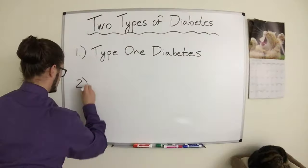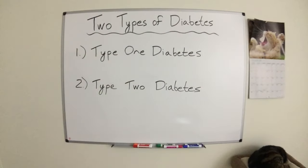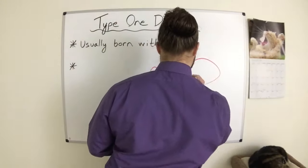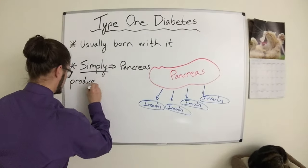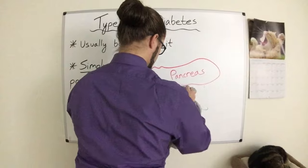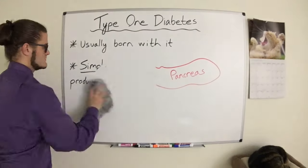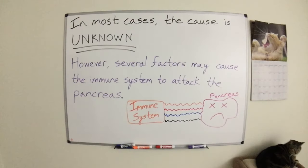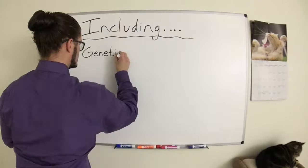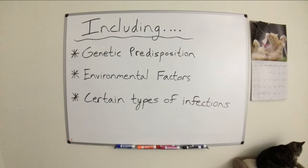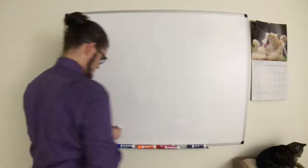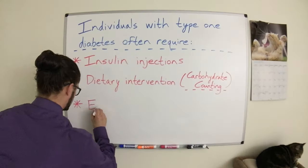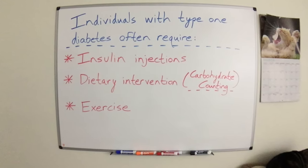Now, there are two types of diabetes: type 1 and type 2. Type 1 diabetes refers to the type of diabetes that people are usually born with. Simply put, type 1 diabetes means that your pancreas is producing no insulin. In most cases, the cause is unknown, but several factors could cause your immune system to attack your pancreas, such as genetics, environmental factors, or even certain infections. Treatment of type 1 diabetes will include insulin shots to ensure that glucose is taken into the cells, as well as other interventions such as carbohydrate counting or regular exercise.